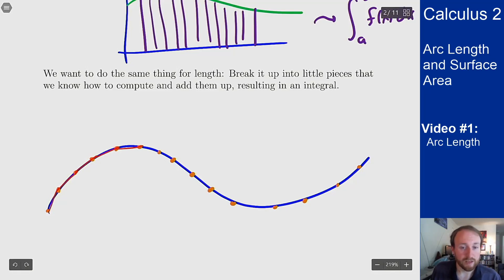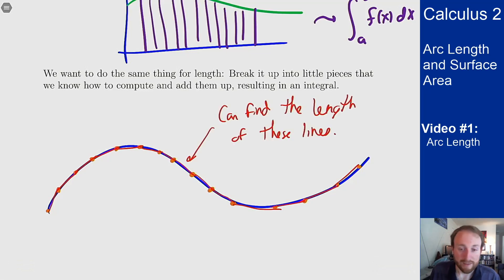These points are pretty close together so the lines are pretty accurate, but if they're further apart you get a more inaccurate picture. The point is each of the approximations are straight lines and I know how to find the length of those. Then if I add those up I should get the approximate length of this curve.